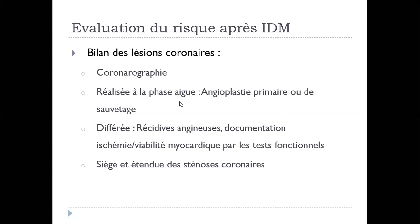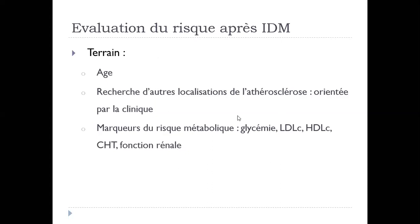Bilan des lésions coronaires. C'est basé surtout sur la coronagraphie bien sûr. Réalisé en phase aiguë : angioplastie primaire ou de sauvetage. Différé, c'est en cas de récidive angineuse ou si j'ai étendue de sténose coronaire. Le terrain : l'âge, les facteurs de risque cardiovasculaire, notamment le diabète, la dyslipidémie, et la fonction rénale.